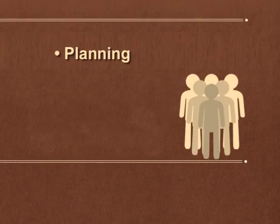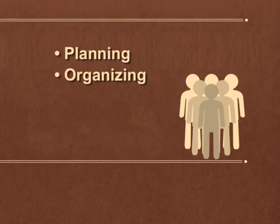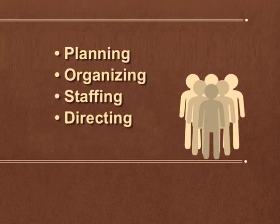You are already aware of the five functions of management: planning, organizing, staffing, directing, and controlling. You have noticed that staffing function follows planning and organizing. Under planning, it is decided what is to be done and how it is to be done. Under organizing, the organization structure is designed.